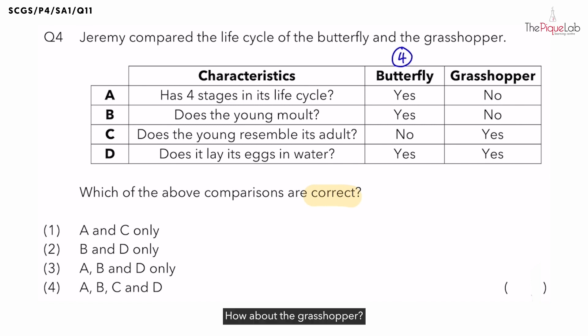How about the grasshopper? How many stages does the grasshopper have in its life cycle? Three. Hence, is it true that the butterfly has four stages in its life cycle and the grasshopper does not have four stages in its life cycle? Yes. So this comparison is true for both organisms.